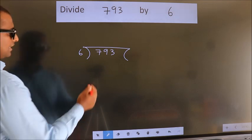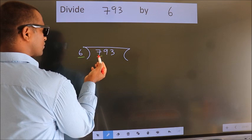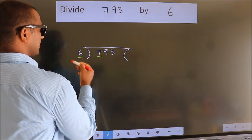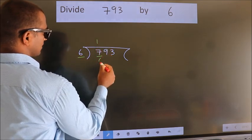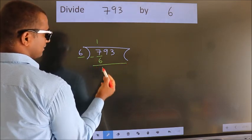Next, here we have 7, here 6. A number close to 7 in the 6 table is 6 times 1, which is 6. Now we should subtract. We get 1.